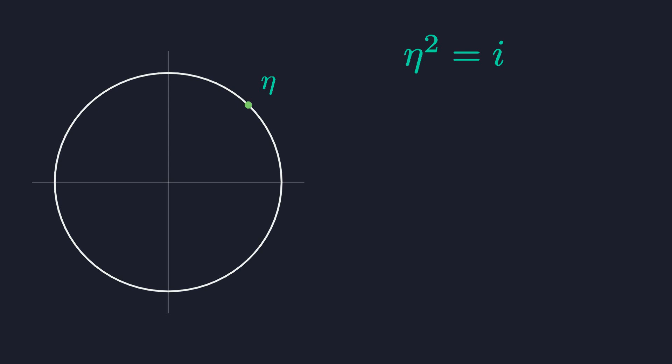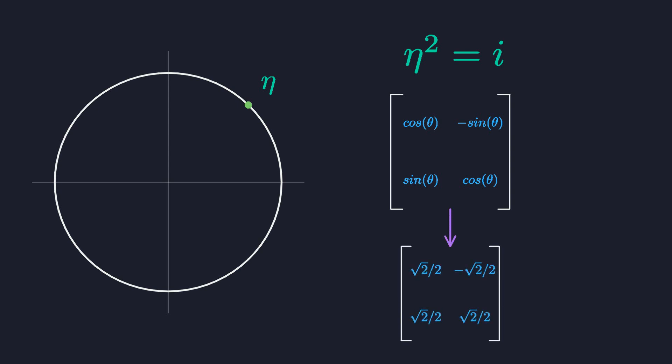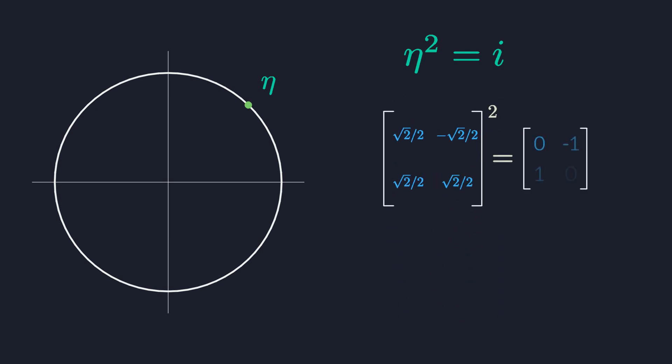Our complex number lies on the unit circle and has an angle of 45 degrees. So let's take a generic rotation matrix and fill in theta equals 45 degrees, or pi over 4. When you multiply this matrix with itself, sure enough, you get i. So this is the square root of i that we were looking for. You can also construct it by following the basis vectors and plonking their coordinates into the columns of a matrix — the result is the same. It may seem weird to take the square root of a matrix, but the square root of x is just a number that squares to x, and here we have one matrix that squares to another.